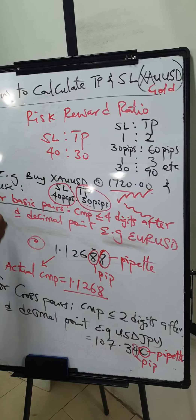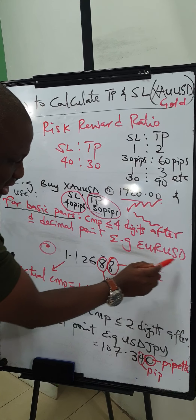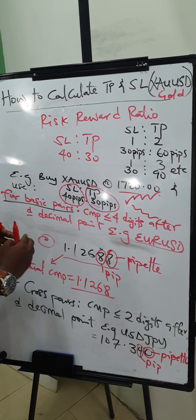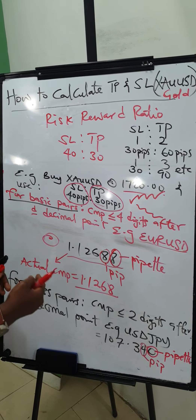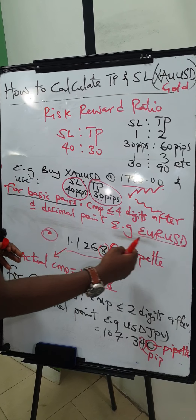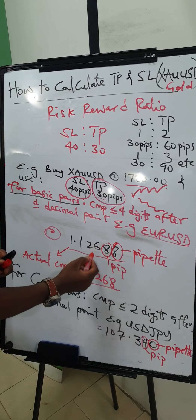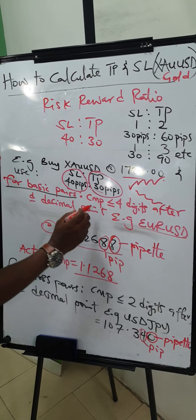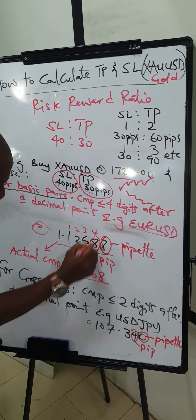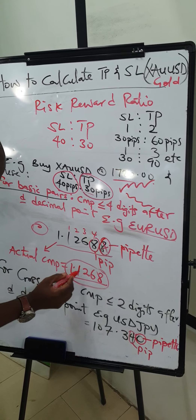In our previous classes, for basic pairs, the current market price is less than or equal to 4 digits after the decimal point. For example, EUR/USD might be priced at 1.12688. Experienced traders read it as 1.12688. The fifth digit after the decimal is the pipette, while the fourth digit is the pip. So the actual price on EUR/USD is 1.1268.